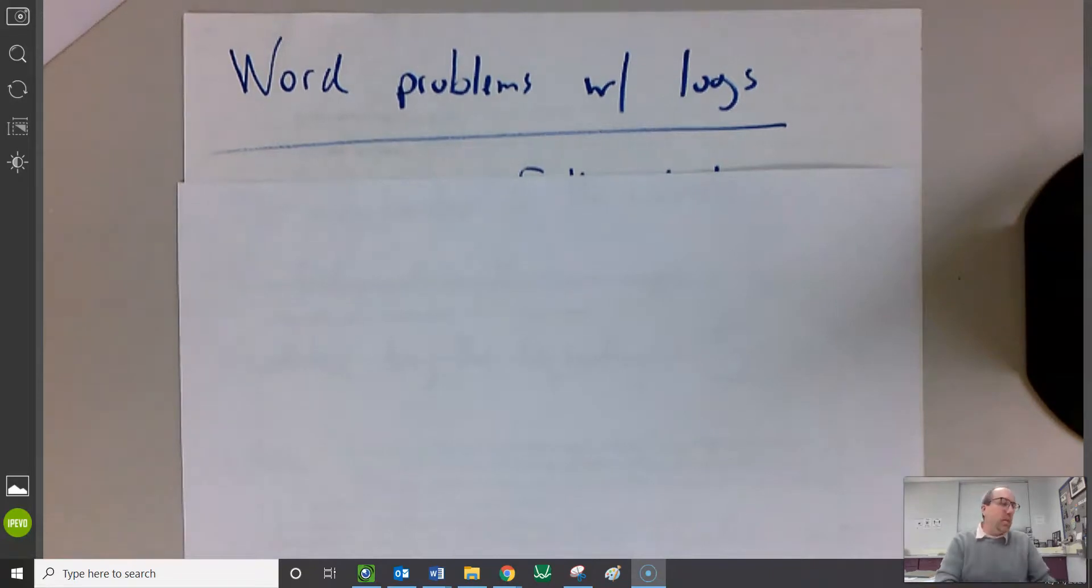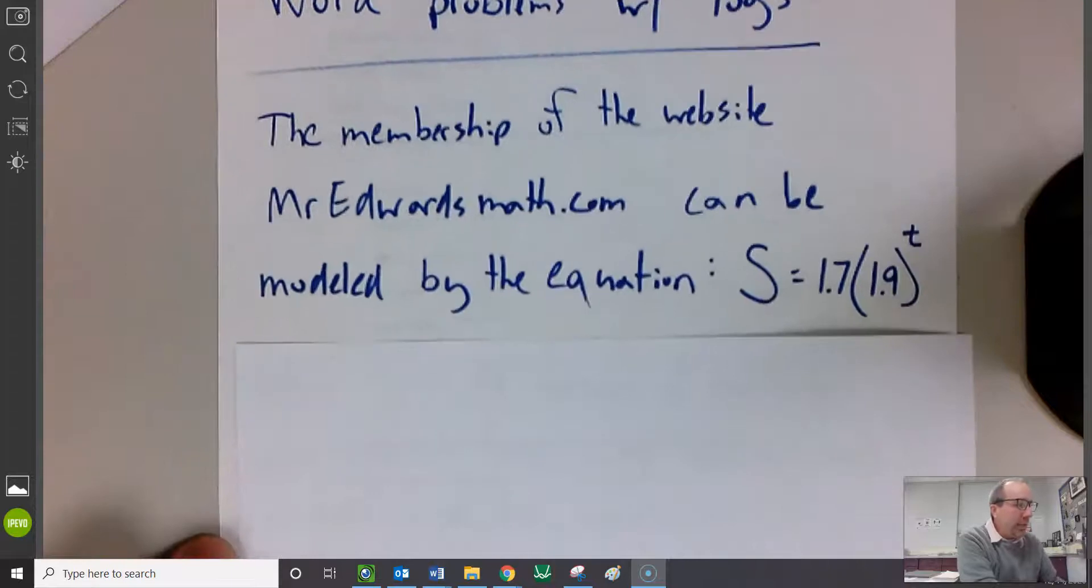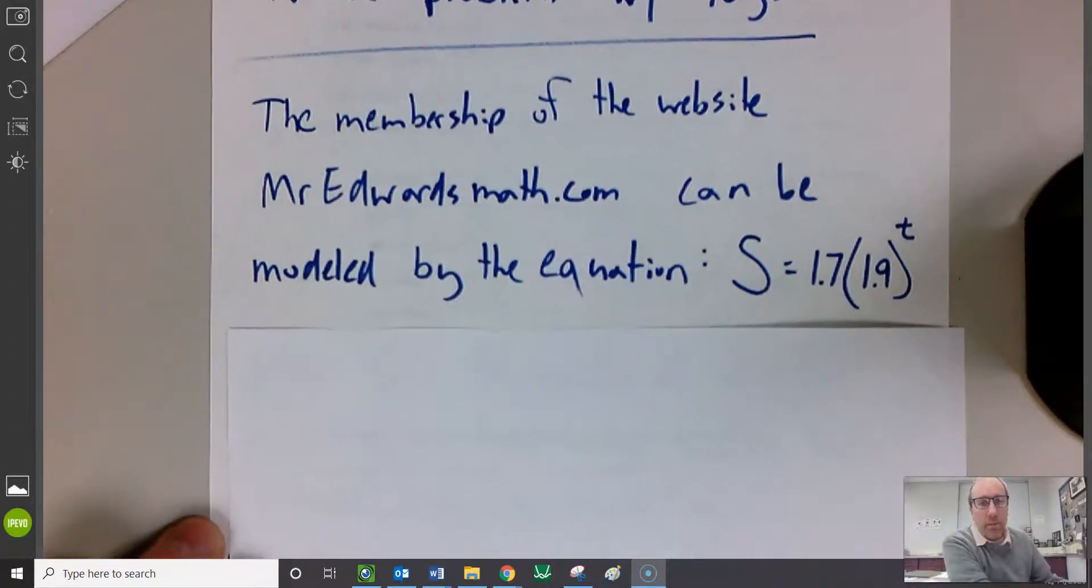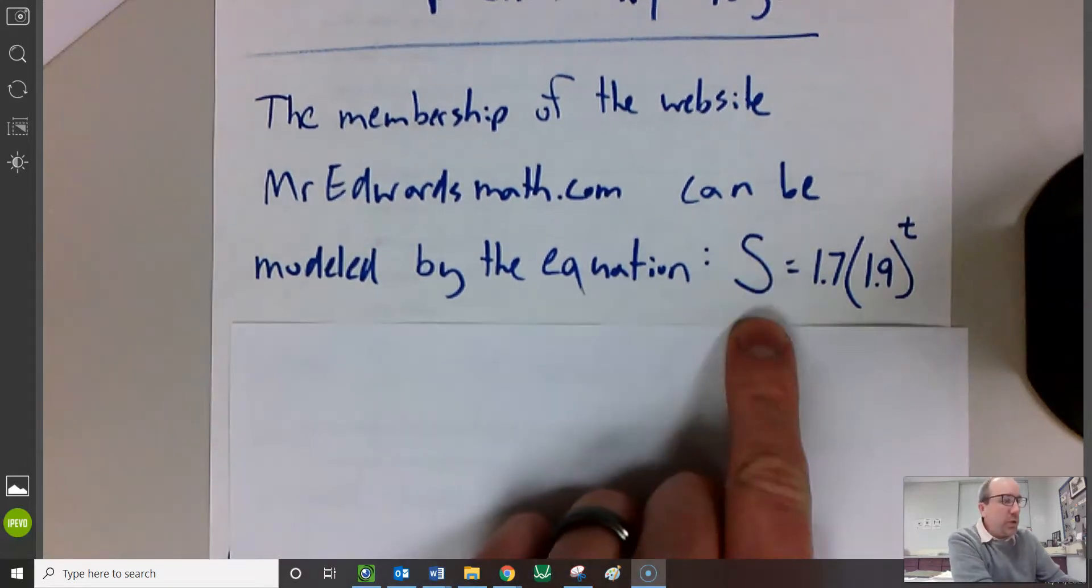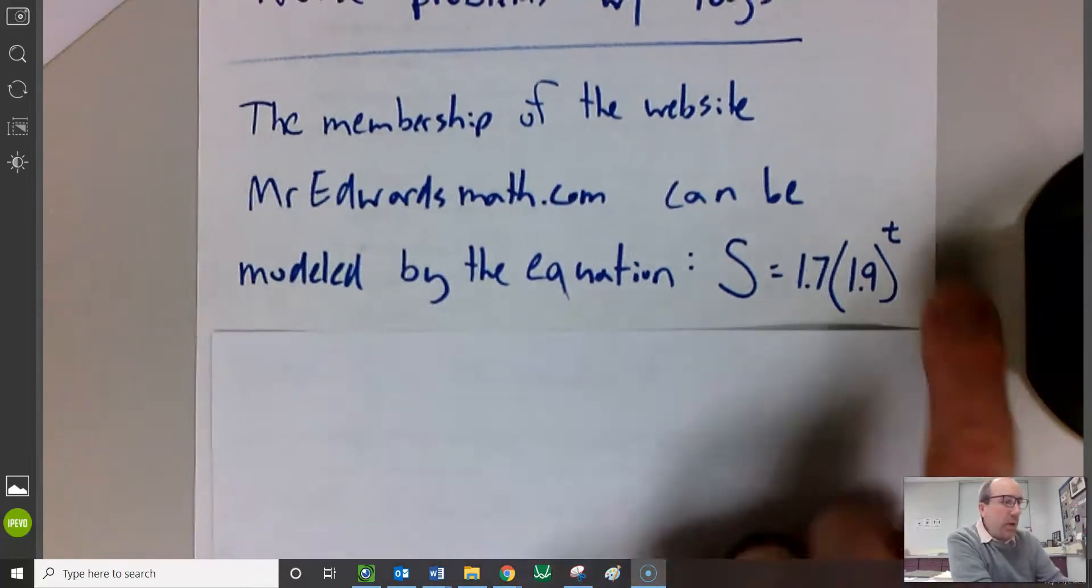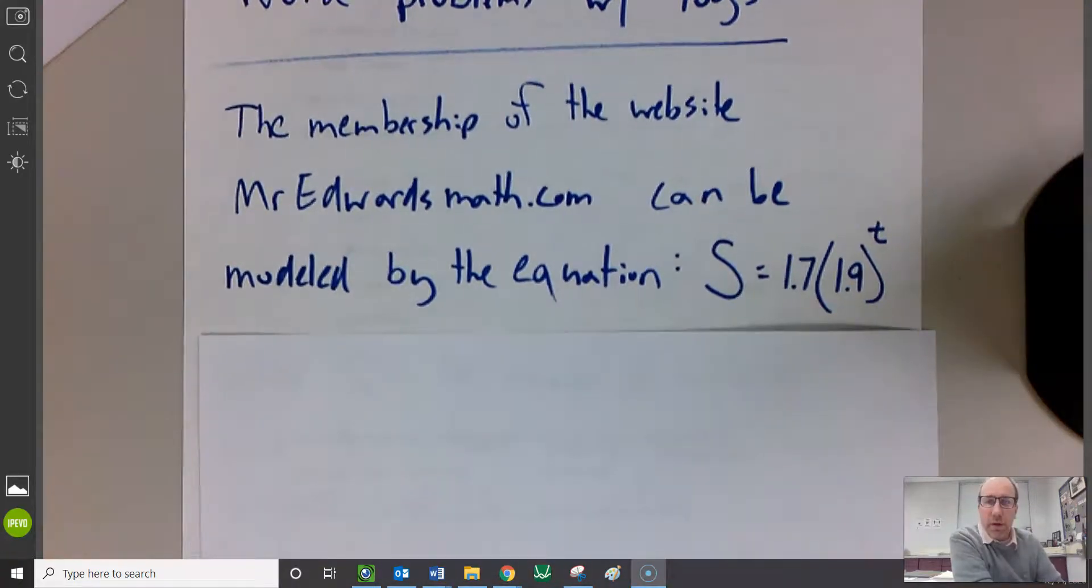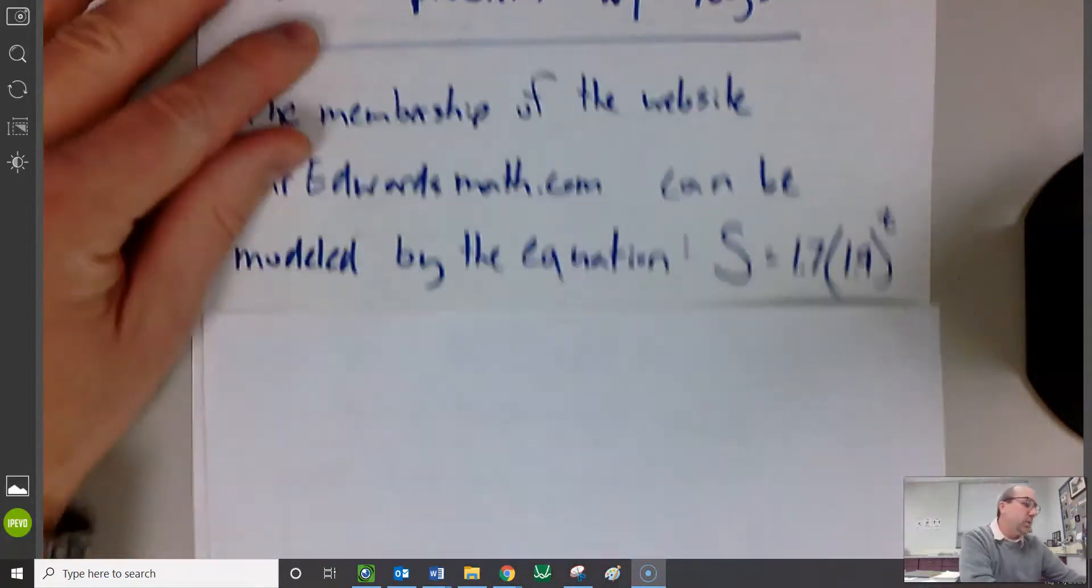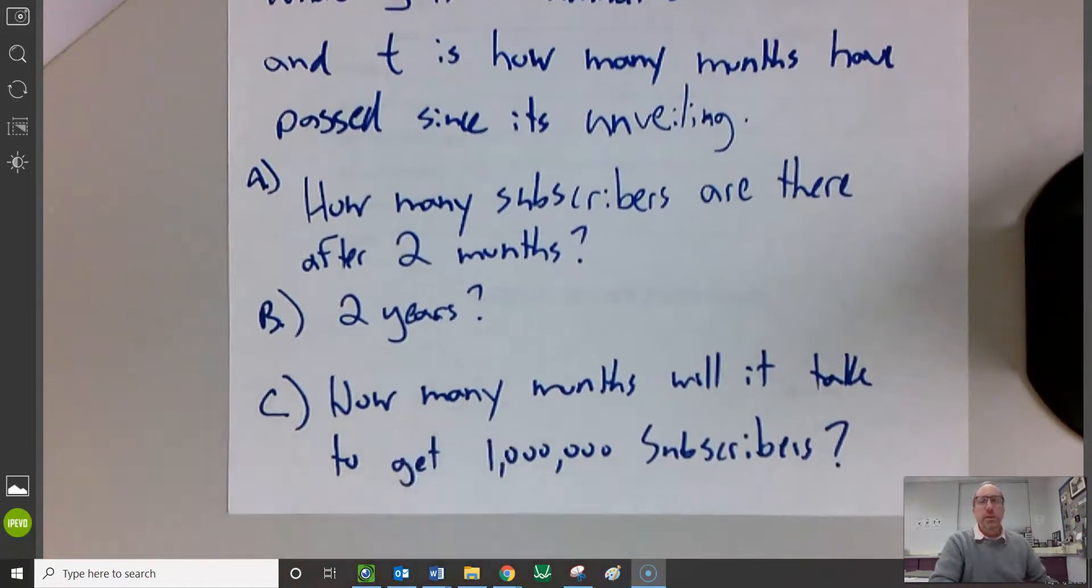Let's start with a little easy one where I just give you the equation. There is a new website out there called MrEdwardsMath.com. You can subscribe to it for free. I'm making this up, it's not real, just to make up a problem. But my subscription for this website can be modeled by this equation, where t is how many months have passed, and s are how many subscribers there are. Let's write that equation down.